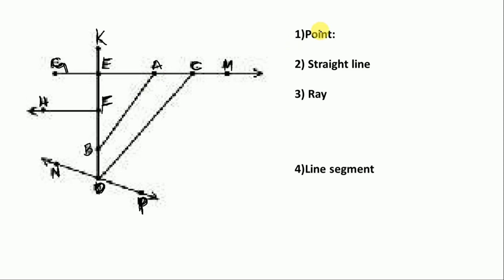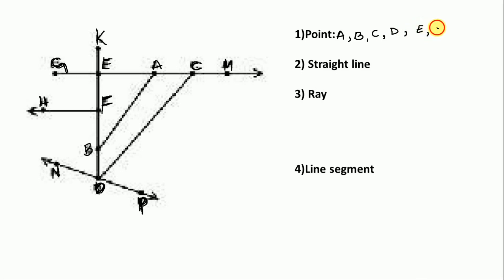The first figure is like this. Points are here: A, B, C, D, E, F, G, K, M, H, N, D, P. So we write here: A, B, C, D, E, F, G, P, K, M, P — these are the points.